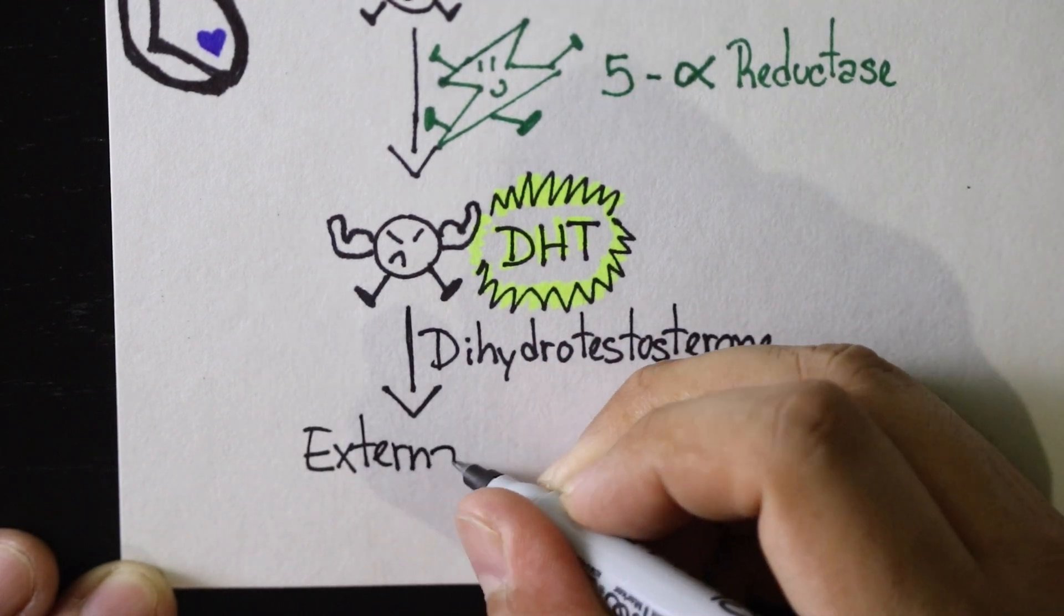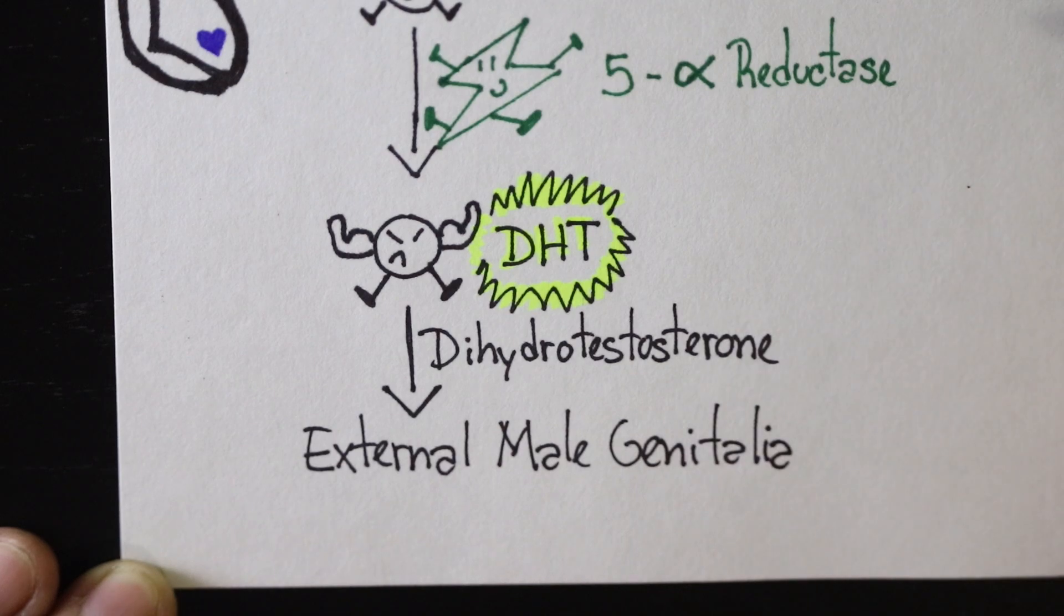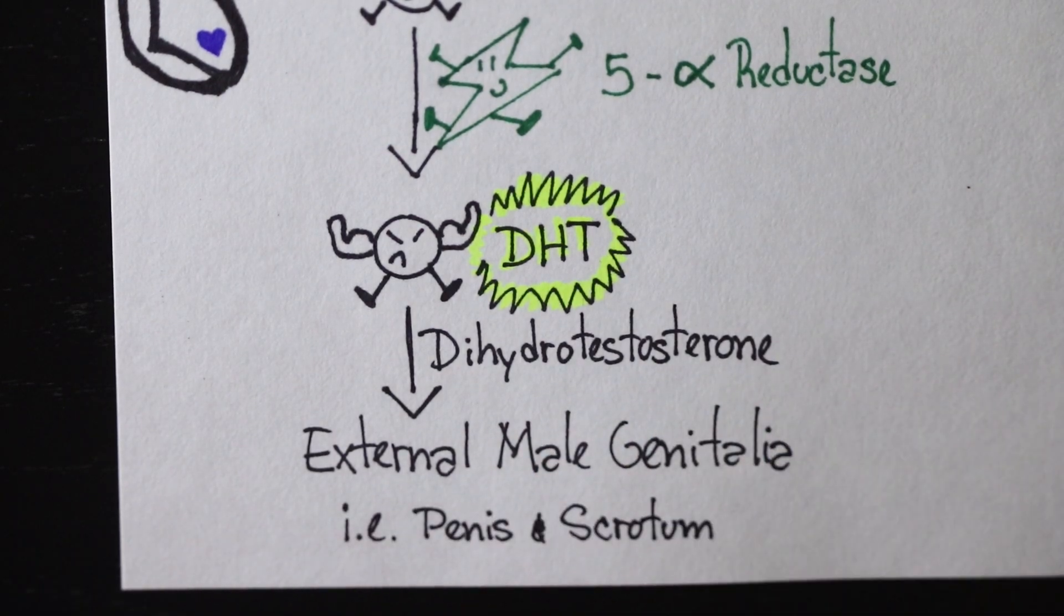DHT is responsible for the development of the external male genitalia, such as the penis and the scrotum.